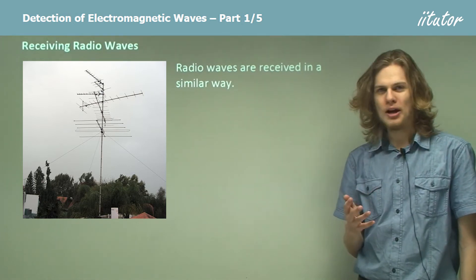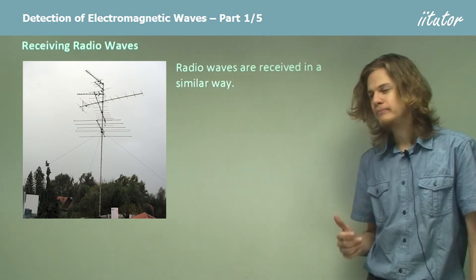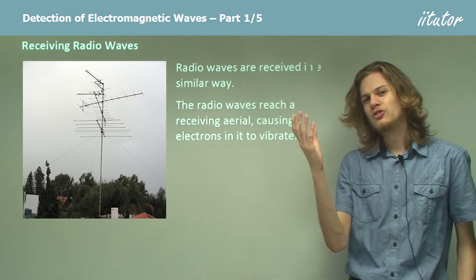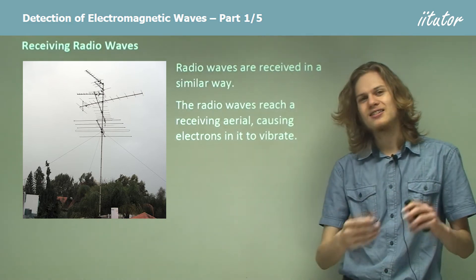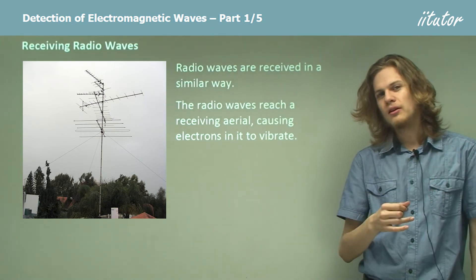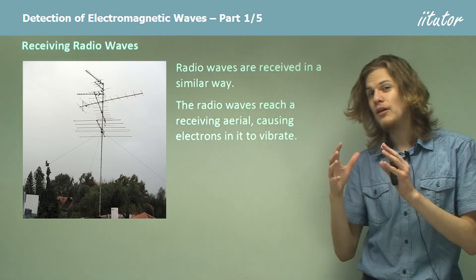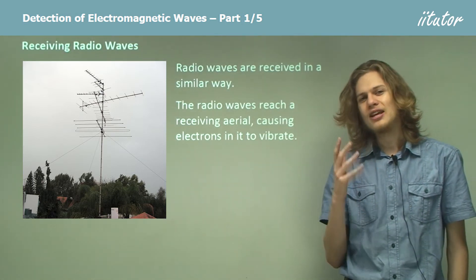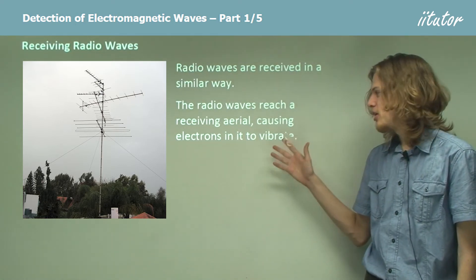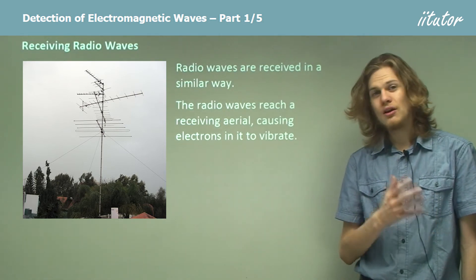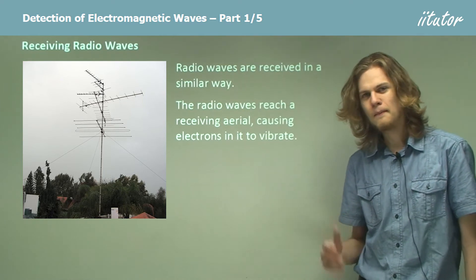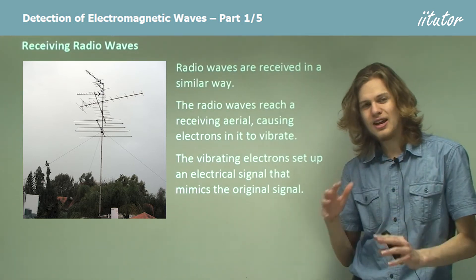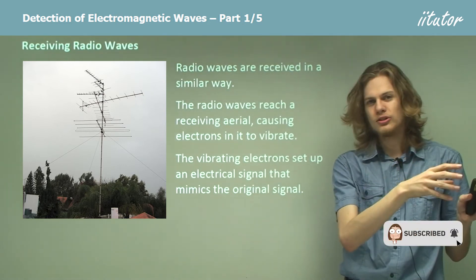We receive radio waves in a pretty similar way. Once again, we need an aerial and a circuit. When the electromagnetic waves reach the receiving aerial, they cause the electrons in that aerial to start moving back and forth with the same frequency as the sending signal. When the wave of that frequency hits the receiving aerial, the electrons inside it start to oscillate at the same frequency — vibrating at the same rate as the electrons in the source. If we have vibrating electrons, that means there must be current flowing, so we get an electrical signal in the circuit connected to the receiving aerial that is exactly the same as the electrical circuit in the source.